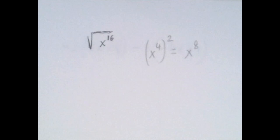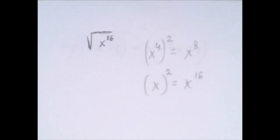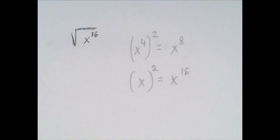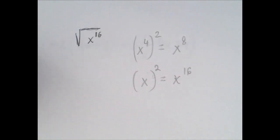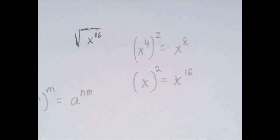So the question is, what should we square to get to x to the 16th? So what exponent can come here so that this would work? The rule that is relevant here is that a to the n to the m's power is a to the n times m power. That's what happened here.